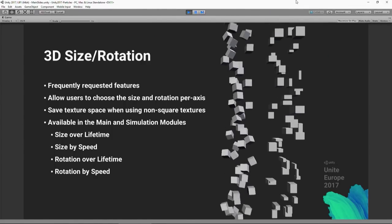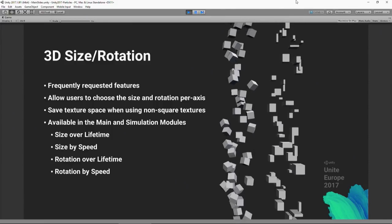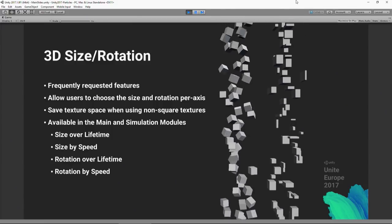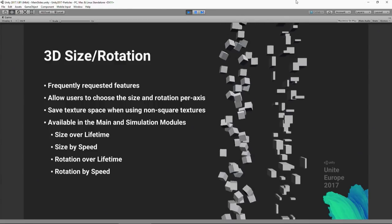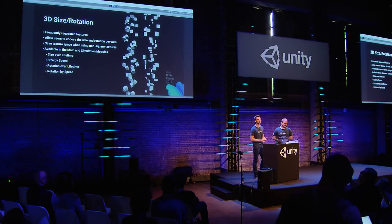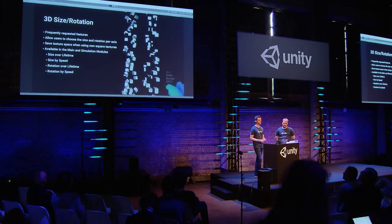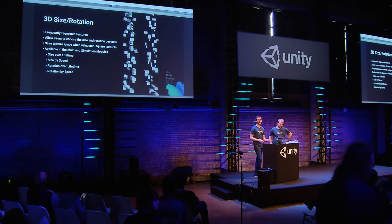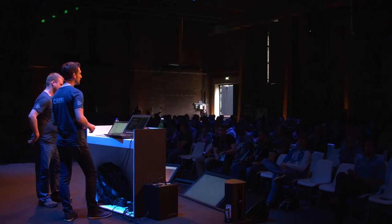The first thing I want to talk about is something we added in 5.3 — part of our focus on adding the most requested core features to the Particle system. Two I want to call out now are the 3D size and 3D rotation controls. This allows you to pick the size and rotation per axis, instead of having a single value applied to the particle on all axes.